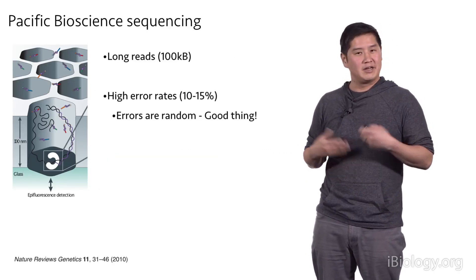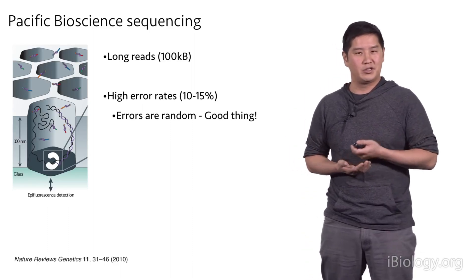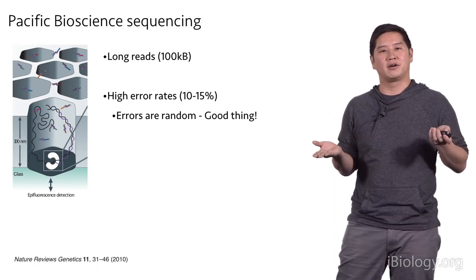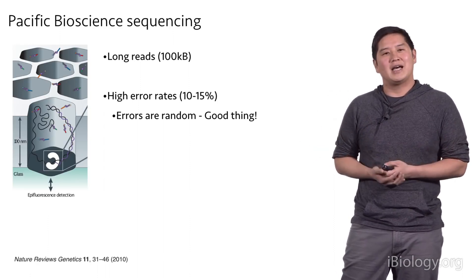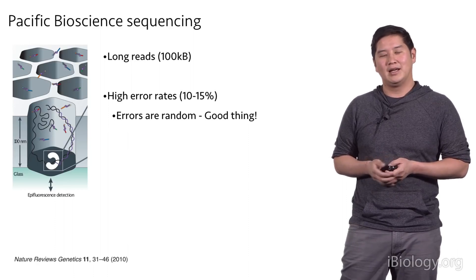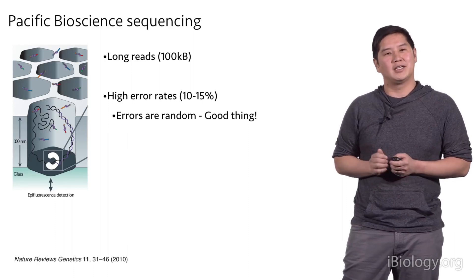And PacBio sequencing generates long reads, anywhere from 1 to 200 kilobases in length. So this is shorter than the nanopore sequencing, but it's still much longer than Illumina sequencing. It also has a high error rate, similar to Oxford Nanopore sequencing. But its errors are random. This is actually a good thing. Because the errors are random, if you sample the same DNA molecule several times, you can generate a very accurate consensus sequence.